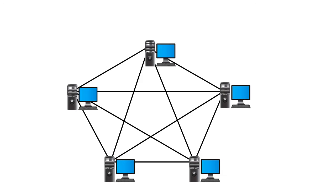Now let us talk about the limitations of mesh topology. If we assume five computers in the network, then each computer must be connected with four other computers. Therefore each computer needs four connection ports. In mesh topology it is quite difficult to build a large setup, and it is not possible to add a new device to the existing setup without connecting all other devices with additional cables and connection ports.